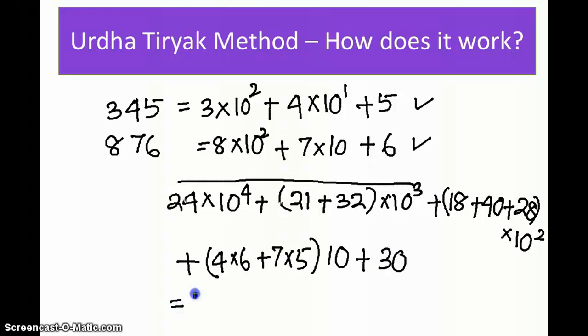This is 240,000 plus 53,000, plus 8,600 (this term).